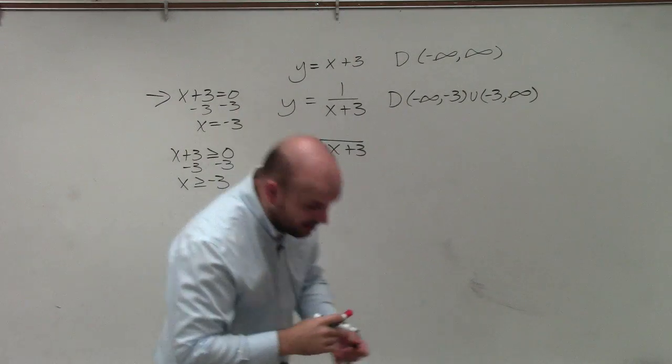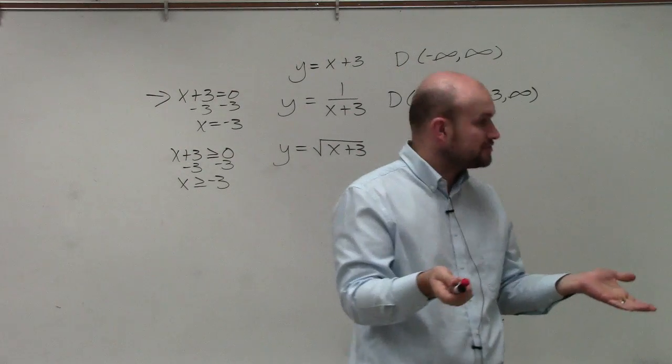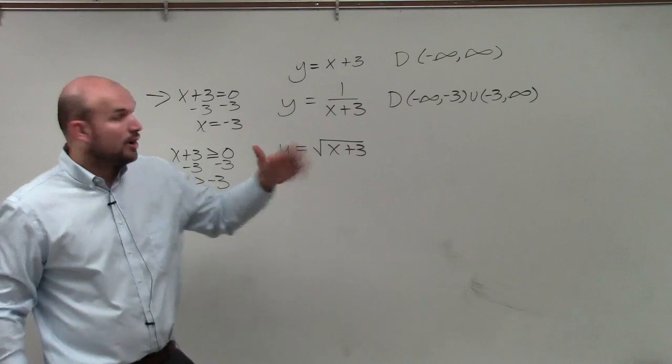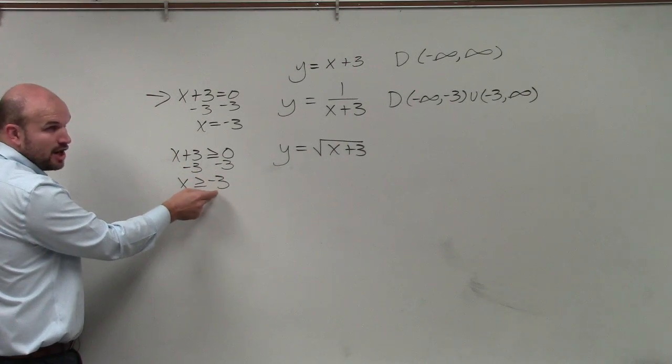So x has to be greater than or equal to negative 3. So going back to algebra 1, we got to say what numbers are greater than or equal to negative 3. 0 is greater than or equal to negative 3. Negative 3 is greater than or equal to negative 3. 1, 2, all positive numbers. But any number less than negative 3 is not in our domain.